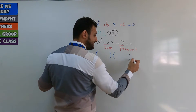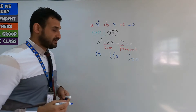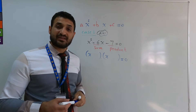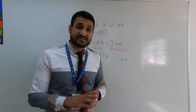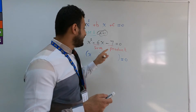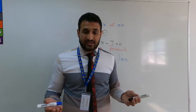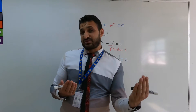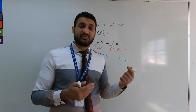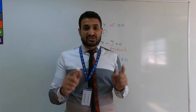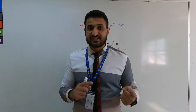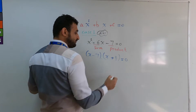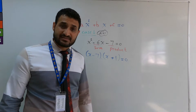Use sum and product: b is the sum, c is the product. Open two brackets with x in each, equals zero. We need two numbers that add to negative 6 and multiply to negative 7. Since the product is negative, one number is positive and one is negative. The numbers are negative 7 and positive 1: negative 7 times 1 is negative 7, and negative 7 plus 1 is negative 6.